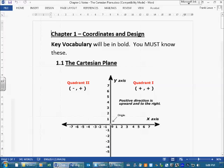Alright, this chapter is called Coordinates in Design, and our first section that we're going to cover in this chapter is called the Cartesian plane, otherwise known as the coordinate grid.